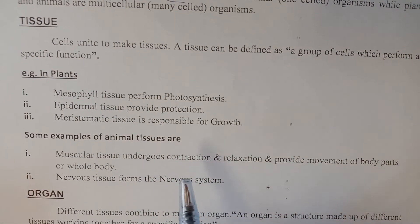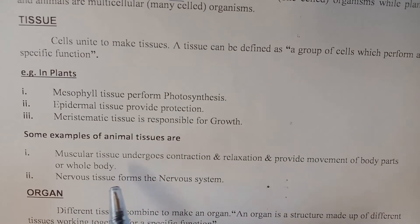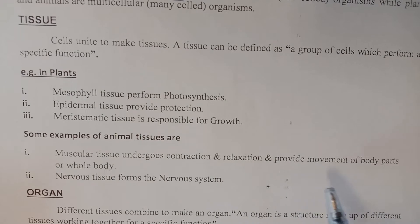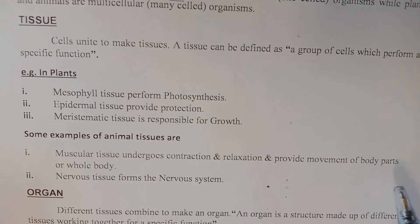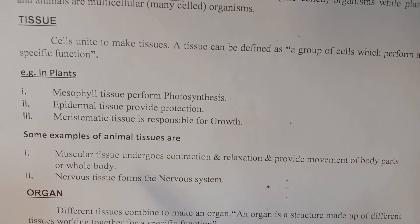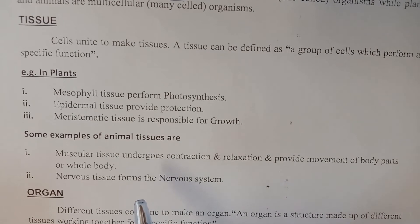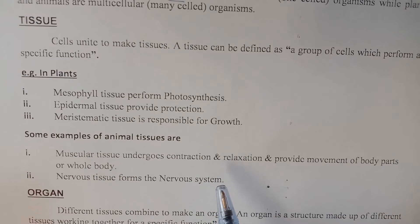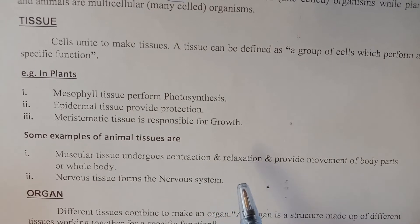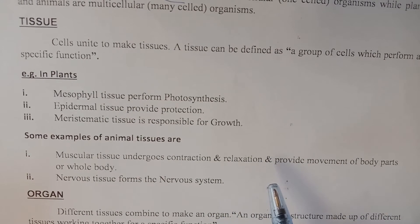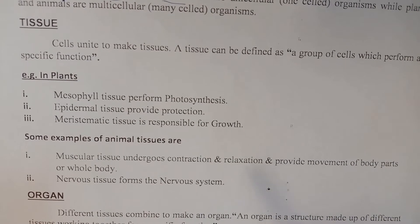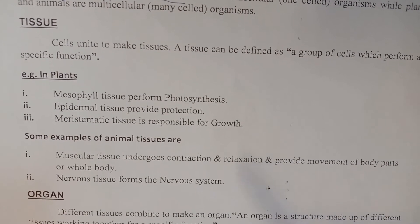Examples of animal tissue include muscular tissue, which undergoes contraction and relaxation and provides movement of body parts. Skeletal muscle tissue is responsible for the movement of body parts — for example, muscles present above the bones are responsible for the movement of the legs and arms.